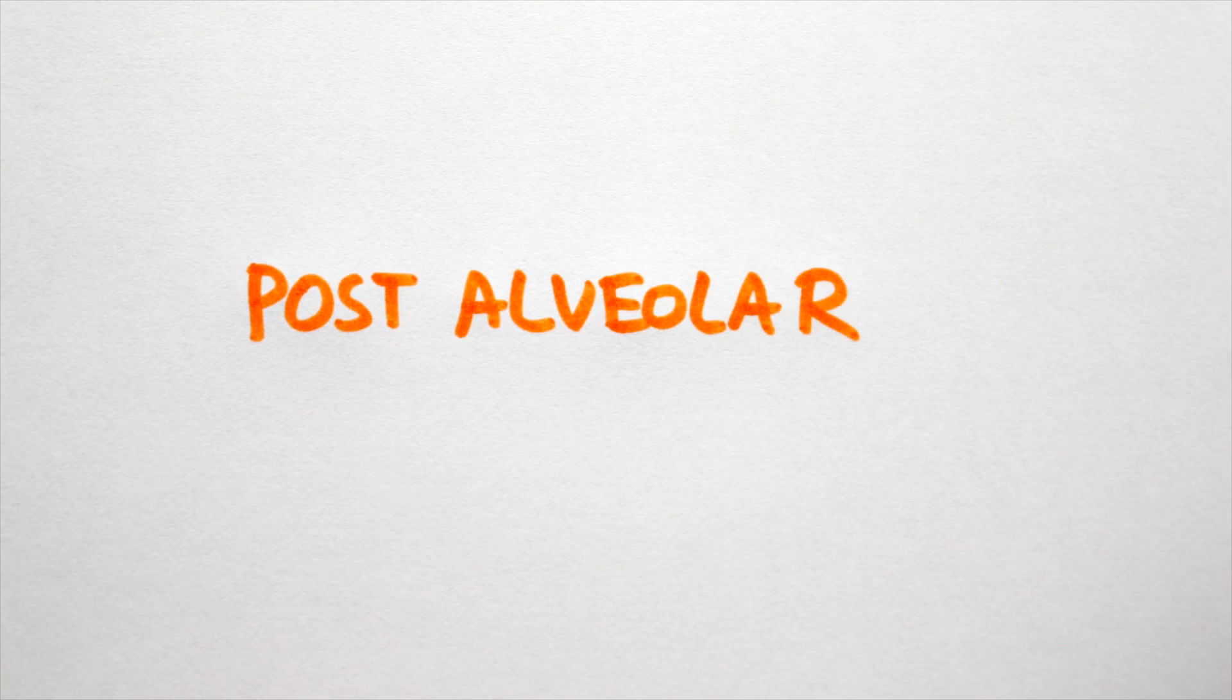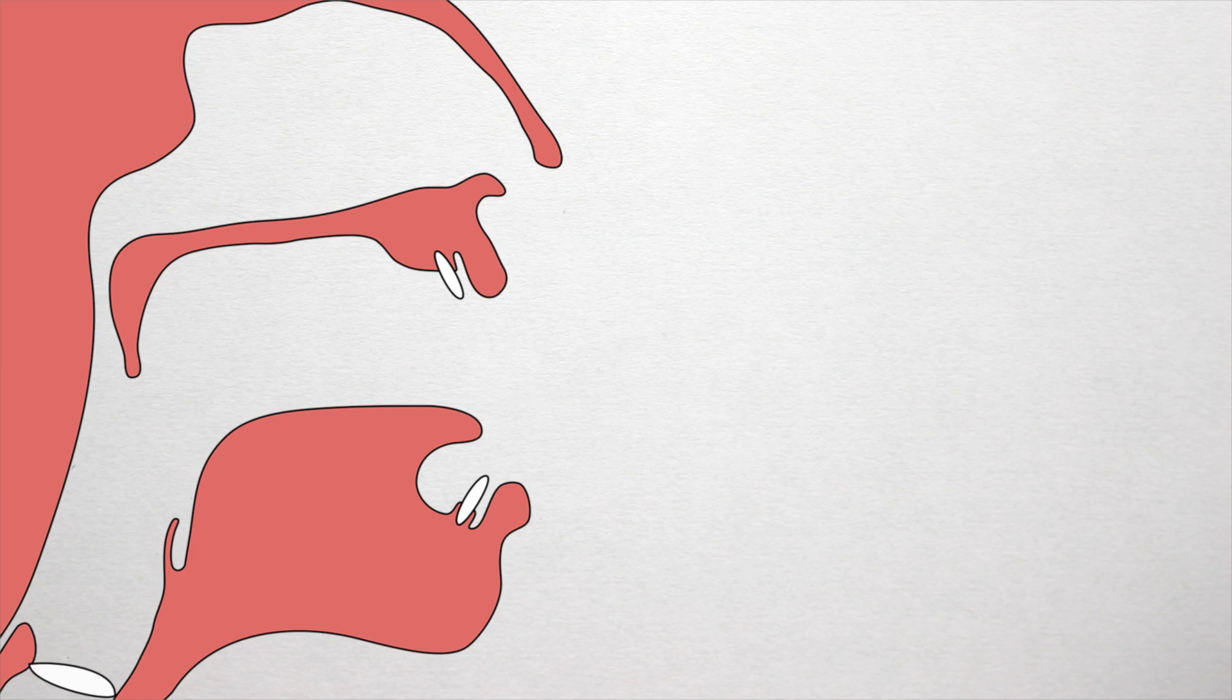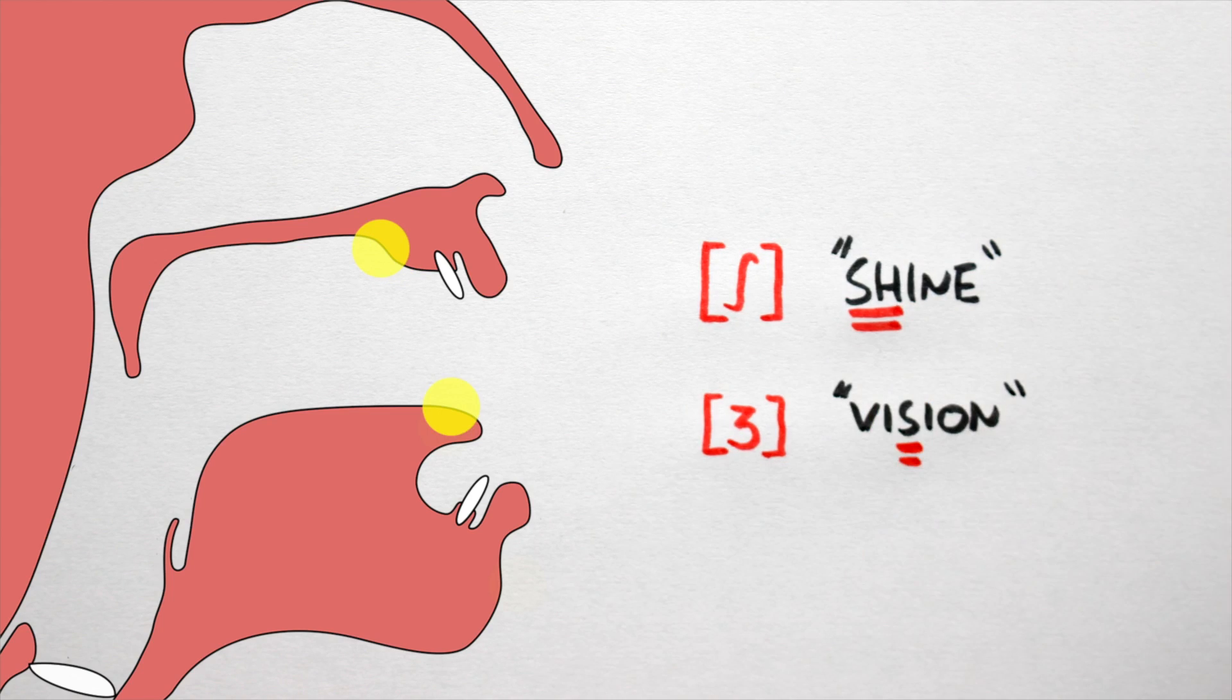Five, post or palato-alveolar. So this is almost the same as alveolar, except the tongue moves back about a centimeter in the mouth. In English, we have two sounds here: sha as in shine, and zha as in vision.